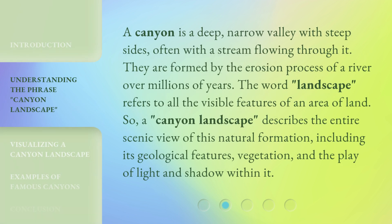A canyon is a deep, narrow valley with steep sides, often with a stream flowing through it. They are formed by the erosion process of a river over millions of years. The word landscape refers to all the visible features of an area of land.